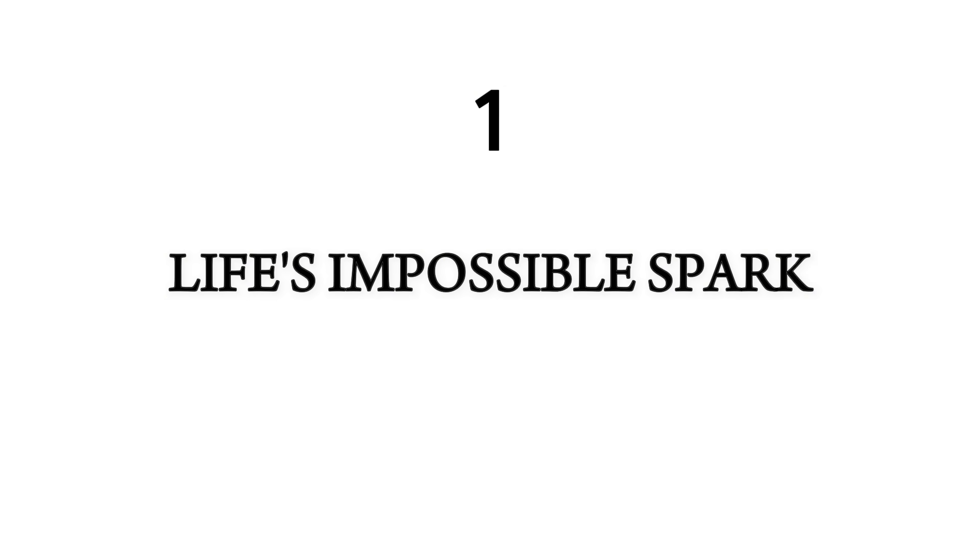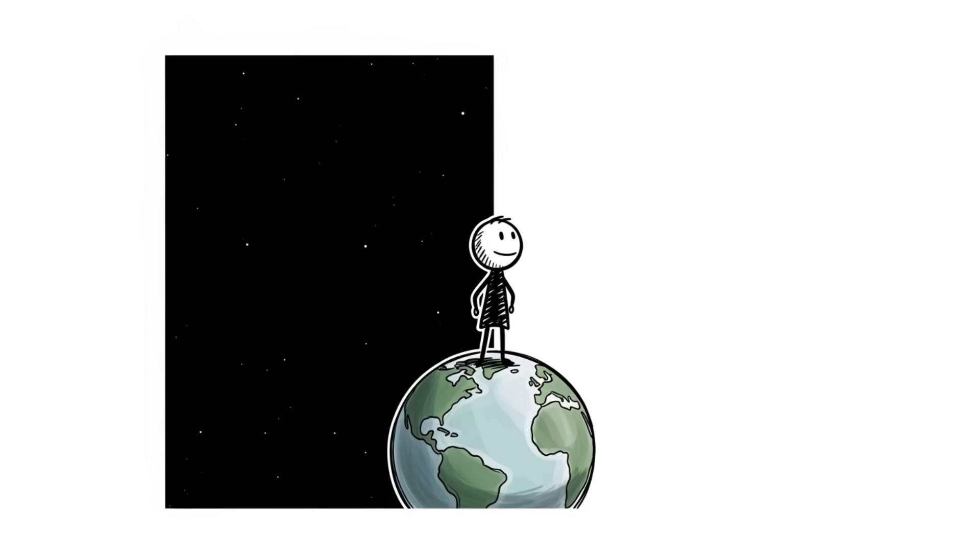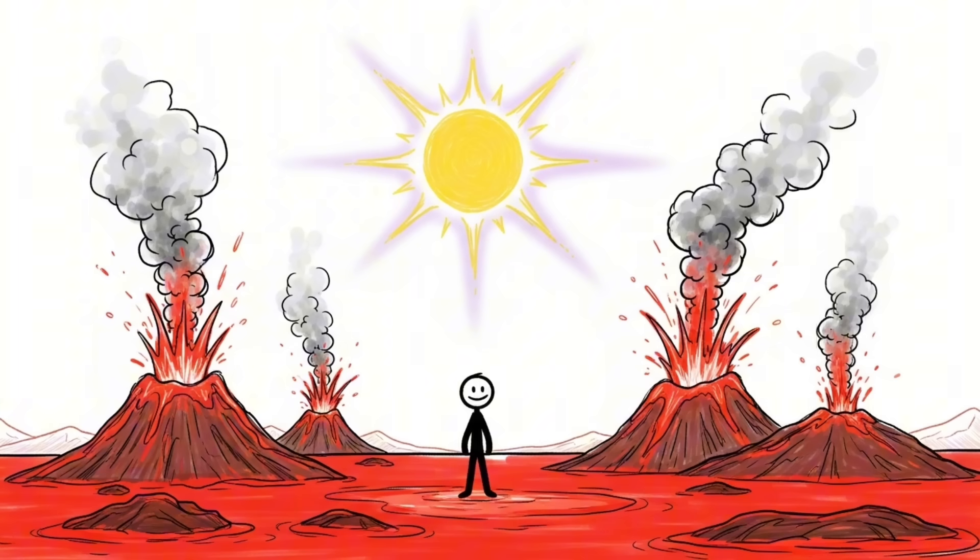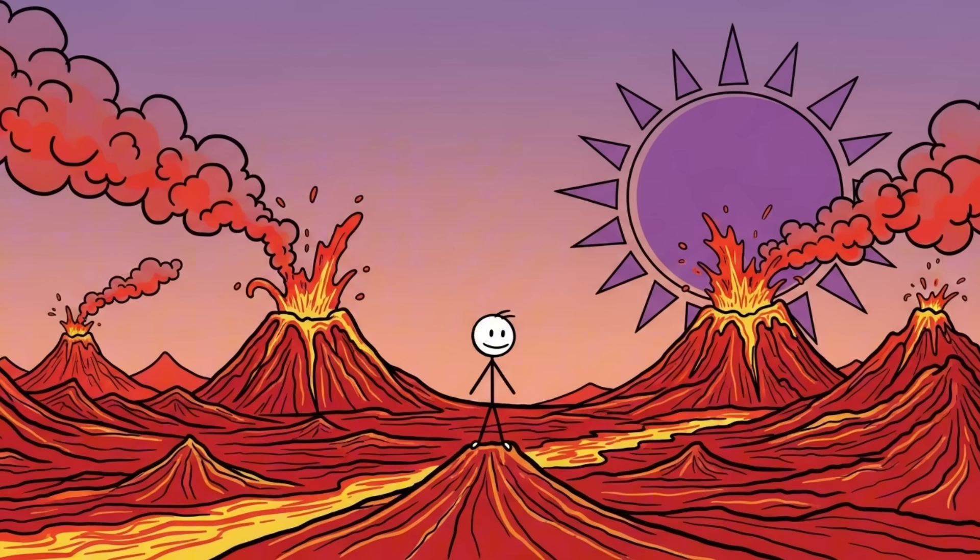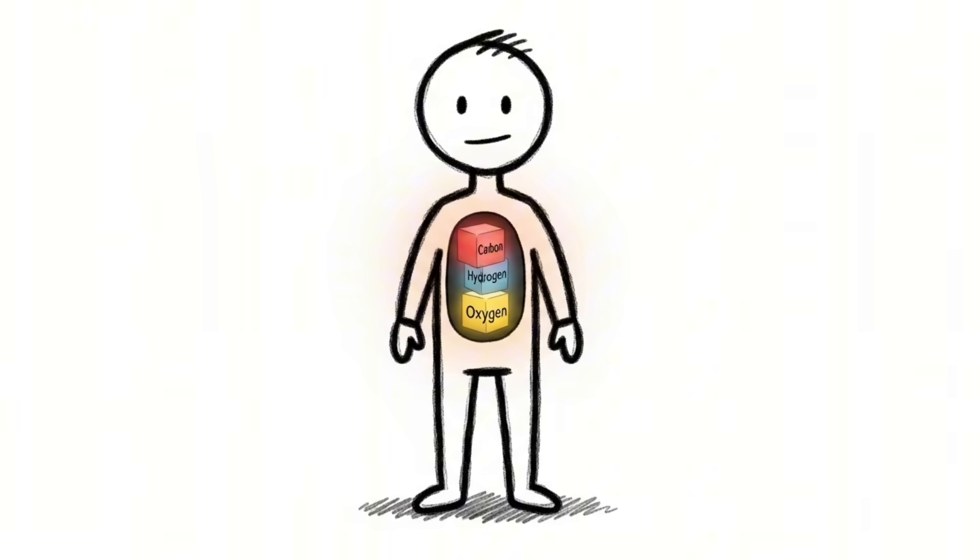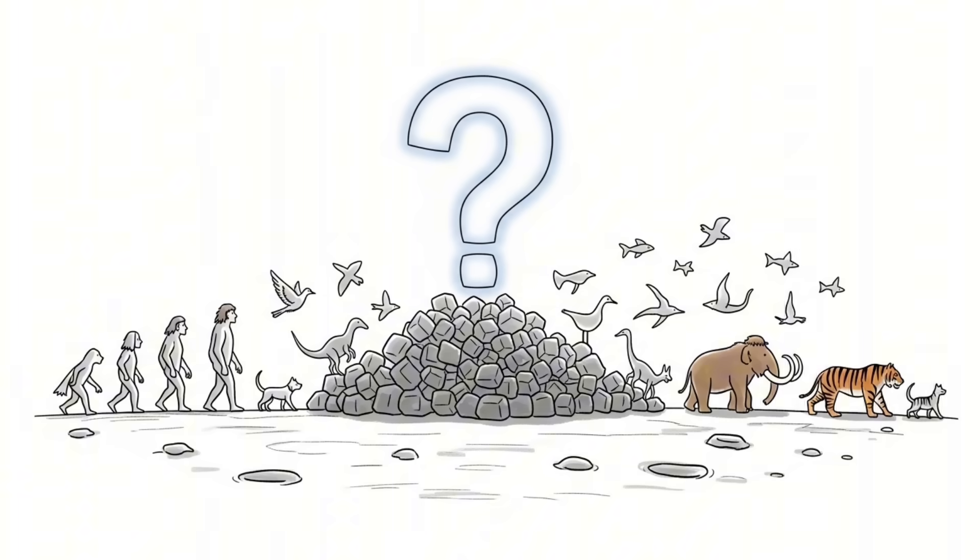Number one, life's impossible spark. About 3.5 billion years ago, Earth looked very different. It was extremely hot, it was volcanically active, and it was completely exposed to UV radiation. Life should not have been possible. Yet here you are. You are made of things that are not alive: carbon, hydrogen, oxygen. So how did a pile of dead chemicals on a lonely rock suddenly create life?